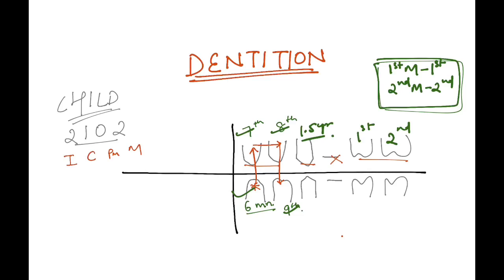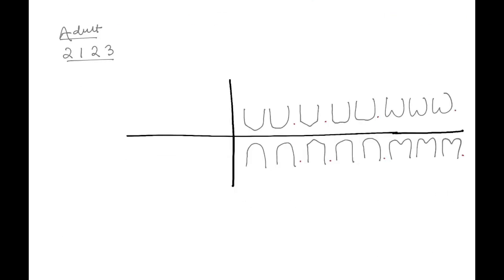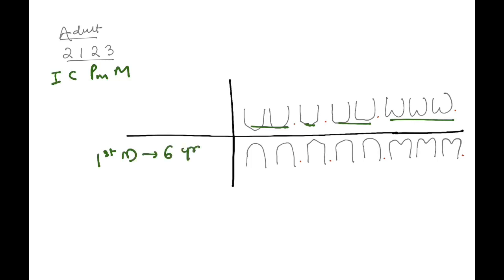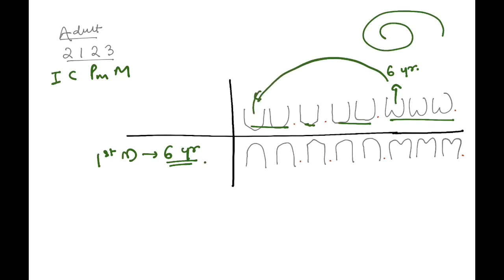Next is the dentition in adults. The formula here is 2123 — two incisors, one canine, two premolars, three molars. The first tooth to arrive in the adult dentition is the first molar, which erupts at six years. Then, going in a spiral manner: the first incisor erupts at seven years, and the lateral incisor at eight years.